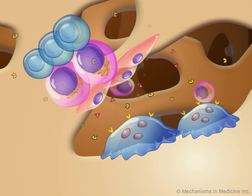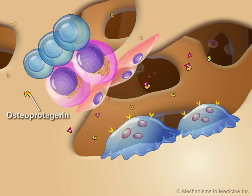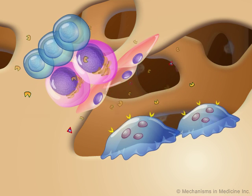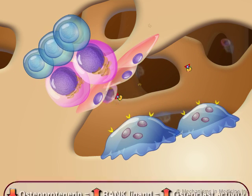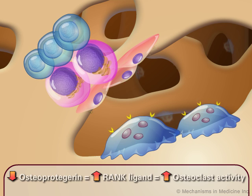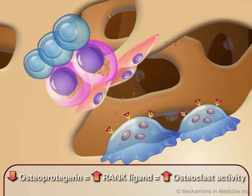Additionally, the secretion of osteoprotegerin by osteoblasts and bone marrow stromal cells is decreased, thereby decreasing suppression of RANK ligand signaling.